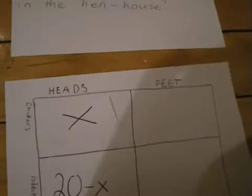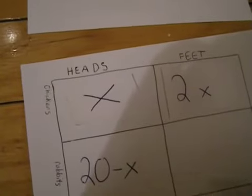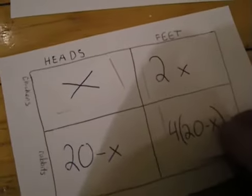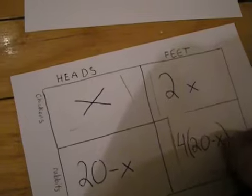Chickens have 2 feet, so we must multiply 2 times X, giving us 2X. Because rabbits have 4 feet, we must multiply 4 times the number of rabbits, which is 20 minus X, giving us 4 times 20 minus X.